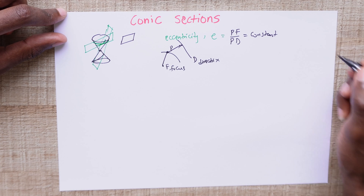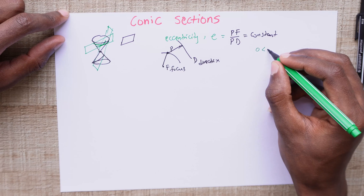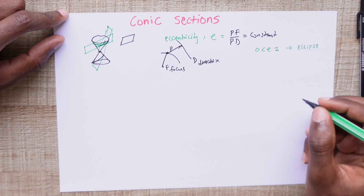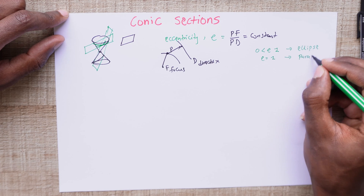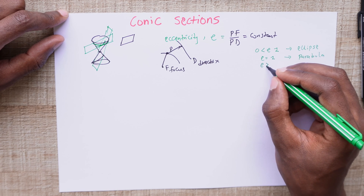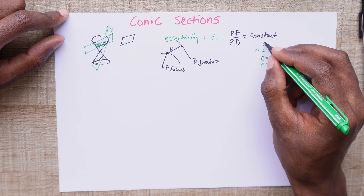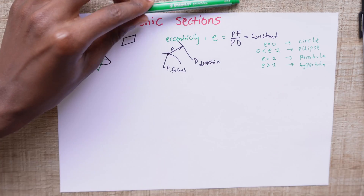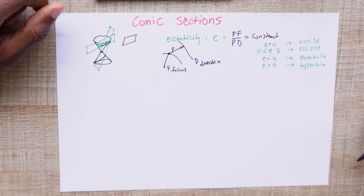Based on this, there are four types of conic sections. If E lies between 0 and 1, we get the first conic section known as the ellipse. If E is equal to 1, we get the second conic section known as the parabola. If E is greater than 1, we get the third conic section known as the hyperbola. And if E is equal to 0 — I ought to have put it first — we get the fourth conic section known as the circle.